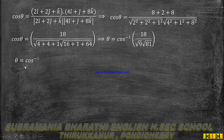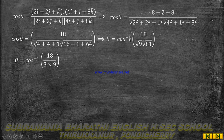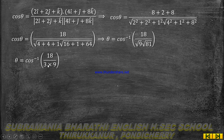Therefore, cos theta equals 18 divided by 27, which simplifies to 2/3. So theta equals cos inverse of 2/3.